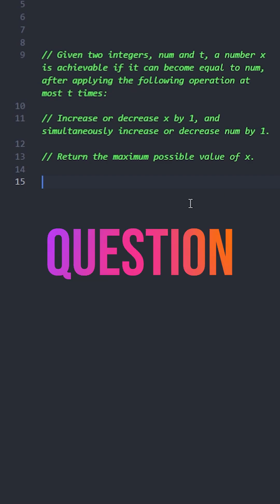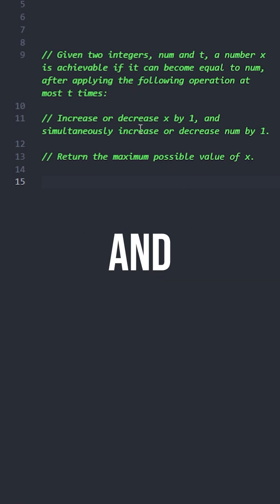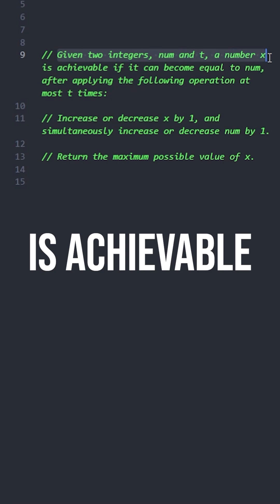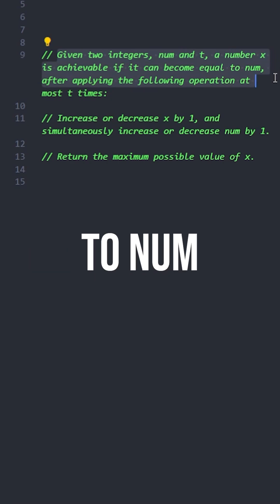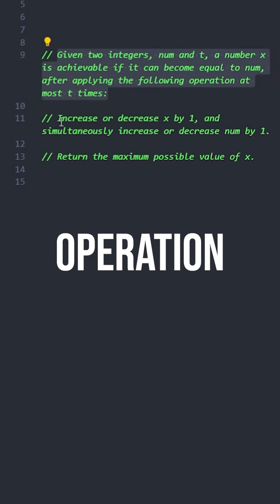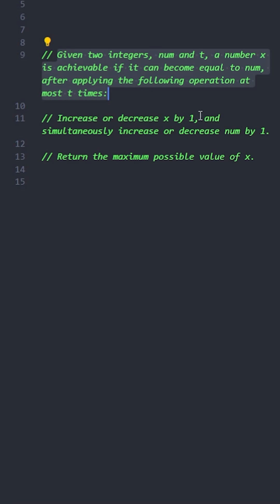Let's solve this JavaScript interview question. Given two integers num and t, a number x is achievable if it can become equal to num after applying the following operation at most t times: increase or decrease x by 1 and simultaneously increase or decrease num by 1. Return the maximum possible value of x.